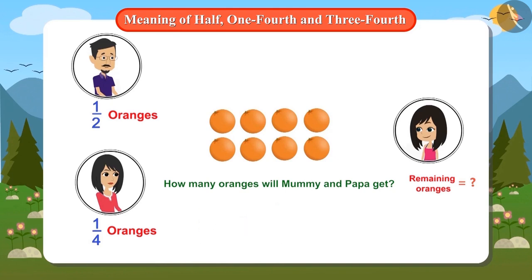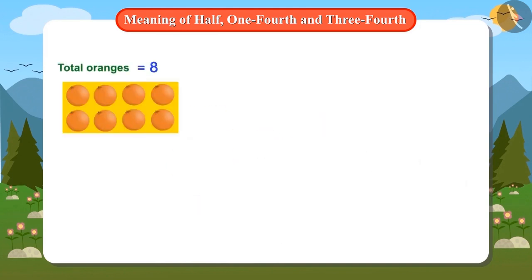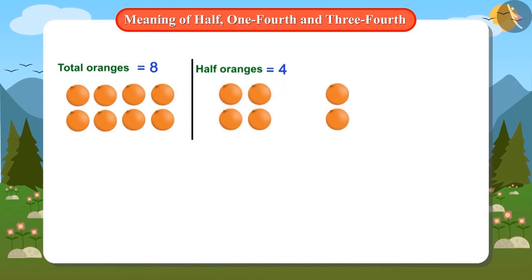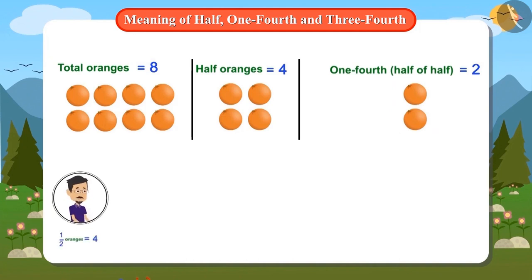Are you ready for this? We have a total of eight oranges. Half of them is four oranges and one-fourth of half is to be calculated. Half of eight oranges is four. Then half of four is two oranges. This means papa will get four oranges and mummy will get two oranges.